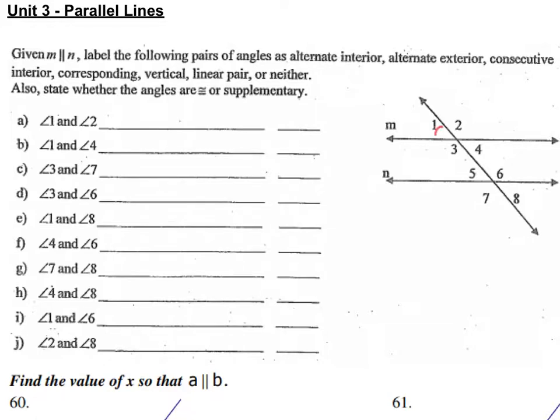So if I look at angle 1 and angle 2, they're something called a linear pair because they're making a line, and linear pairs are supplementary.